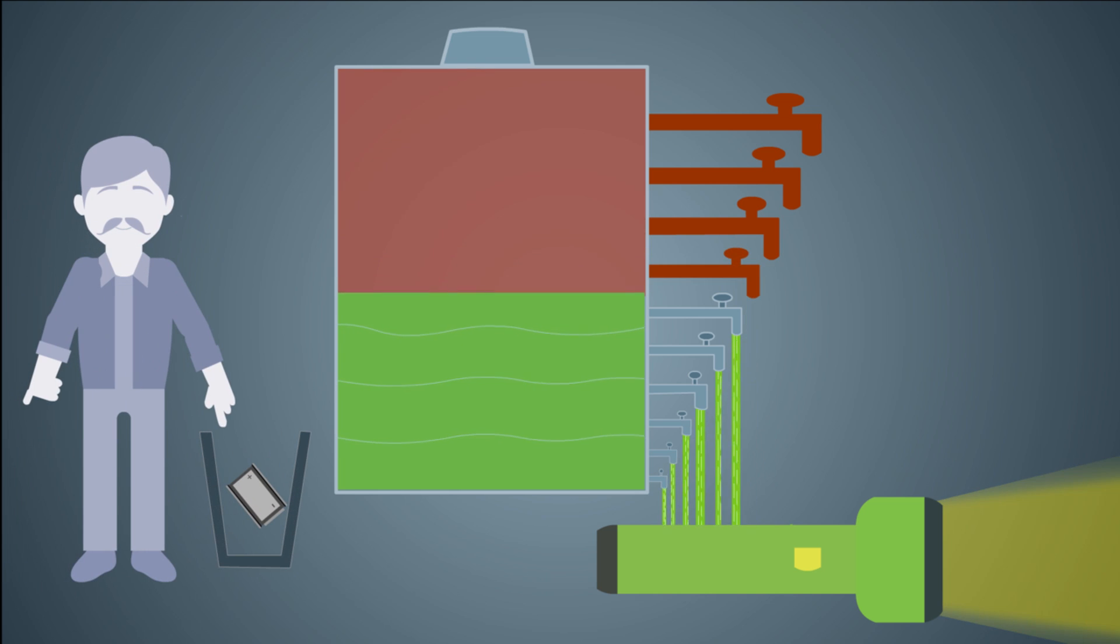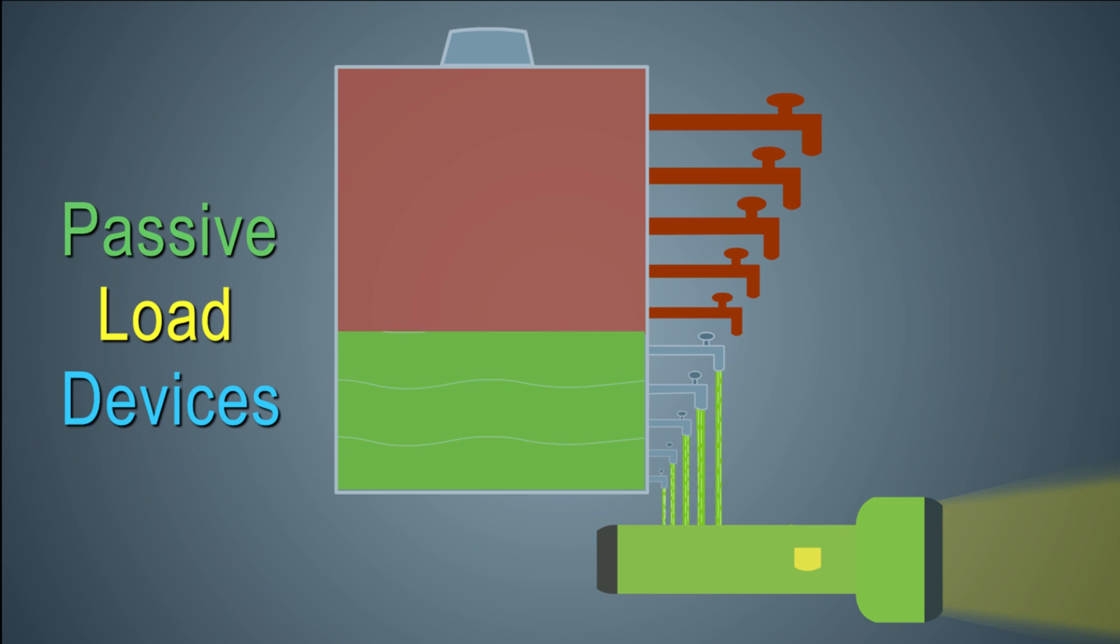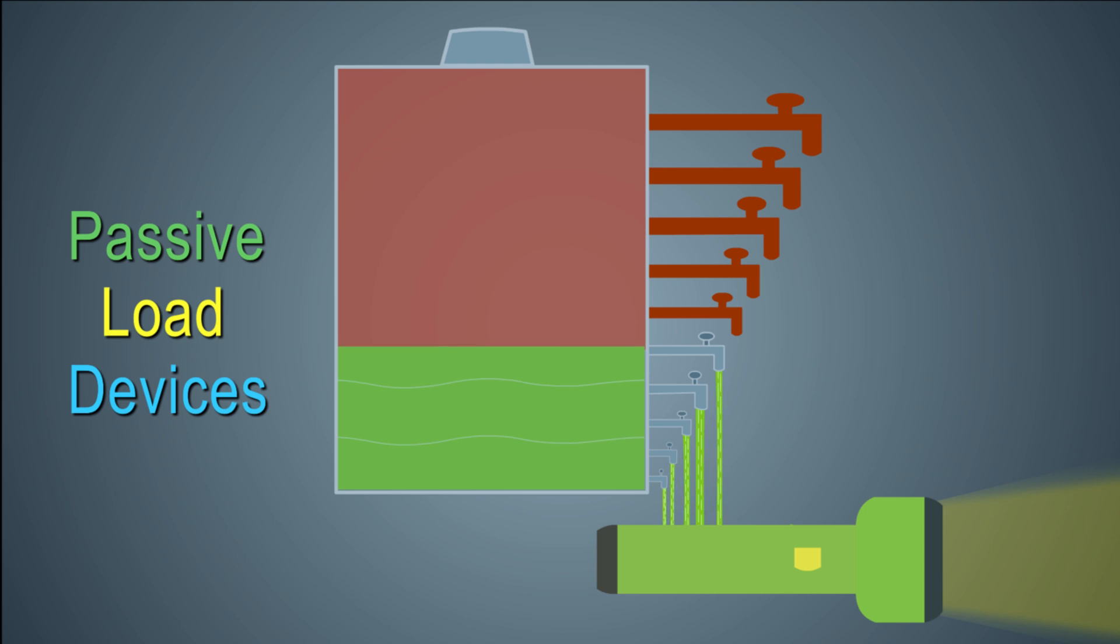Many people throw away the batteries and replace them at this point. This is why passive load devices initially operate at maximum performance, then continue to get weaker until all the juice from the battery is used.